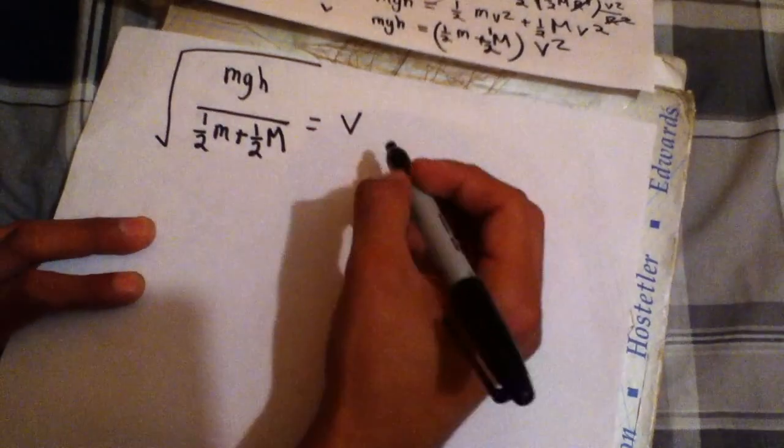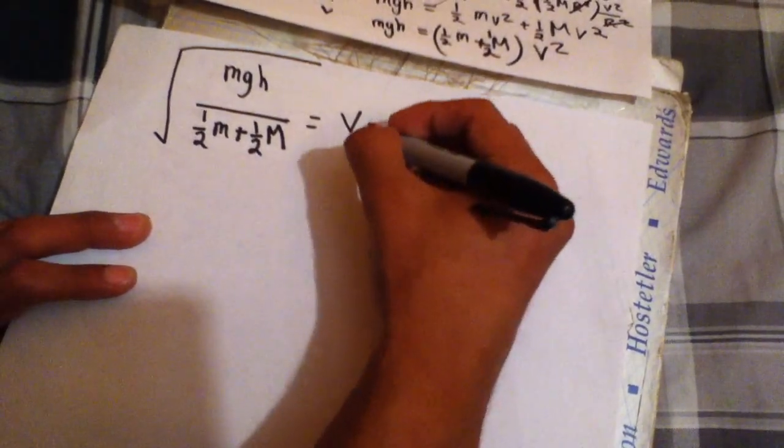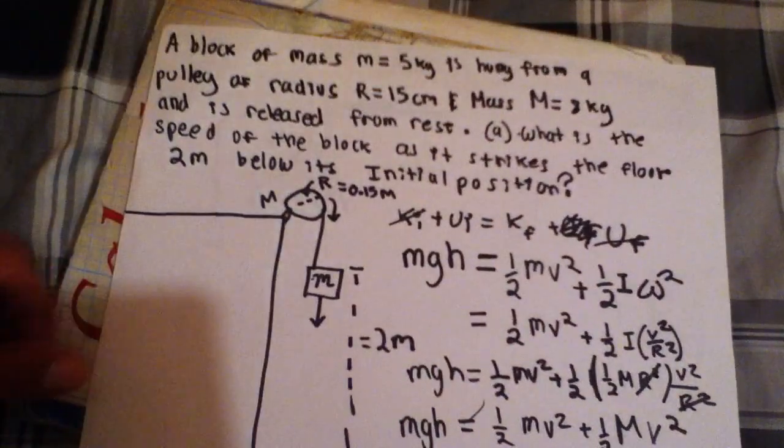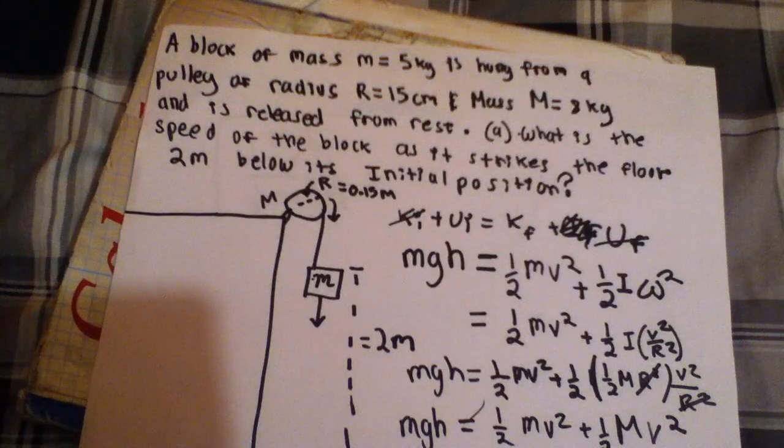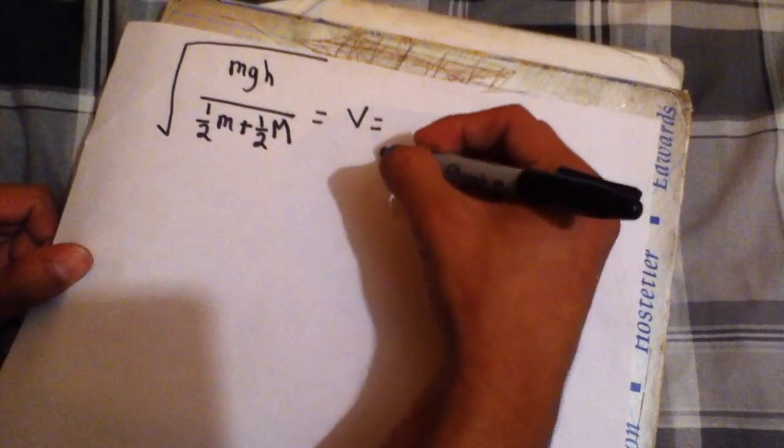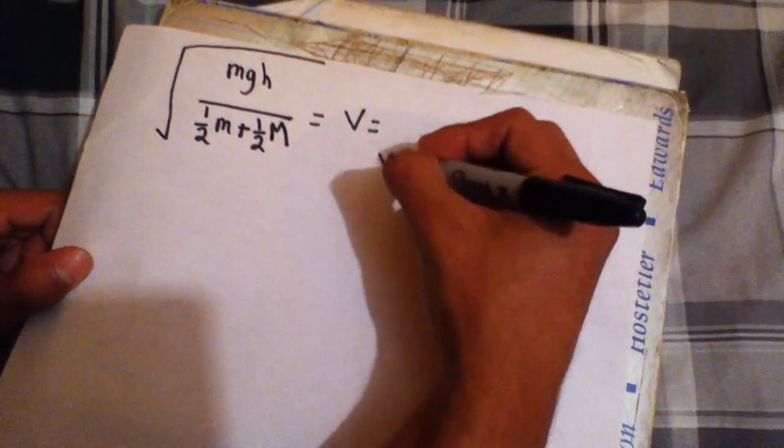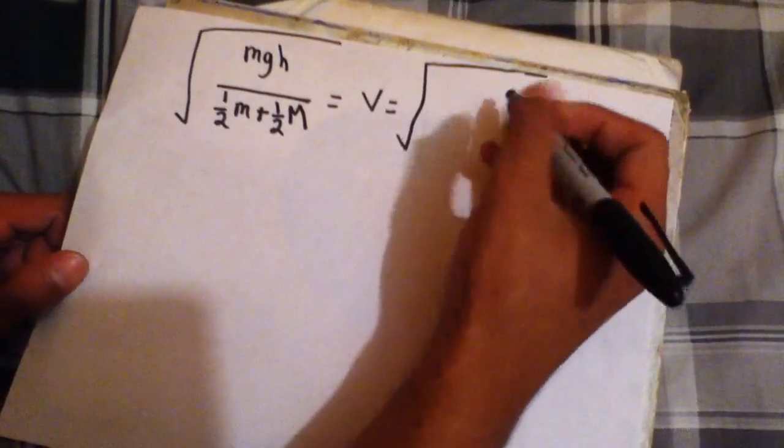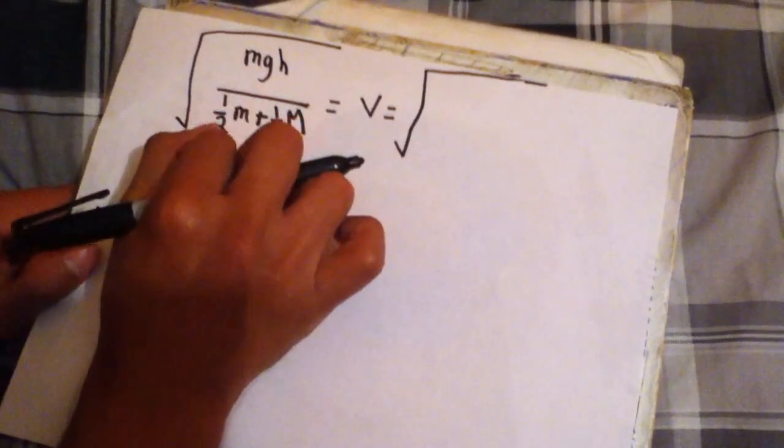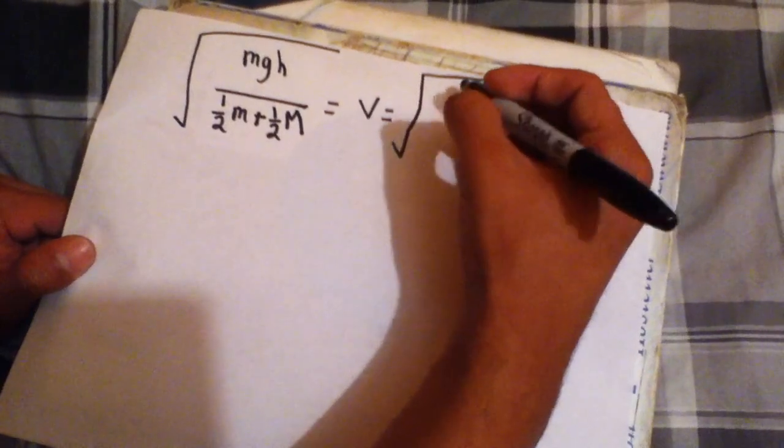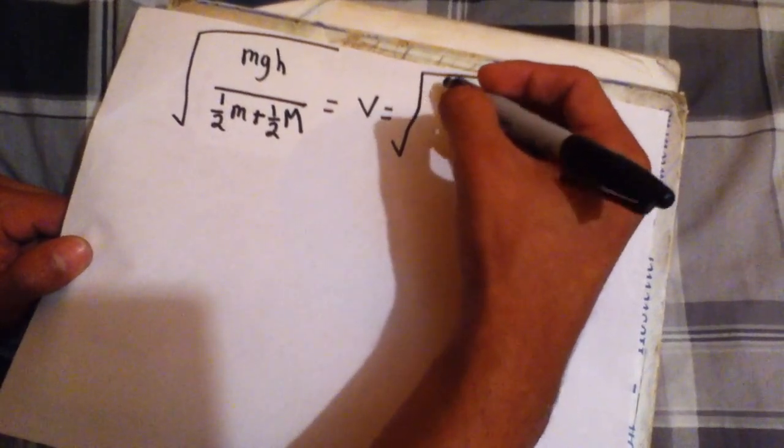And then all you have to do now is simply plug in these given values. So take a look at them, write them down, and then I'm gonna plug them in. So then V equals the square root of the mass of the, don't confuse m with big M. The mass of the block is 5 kilograms.